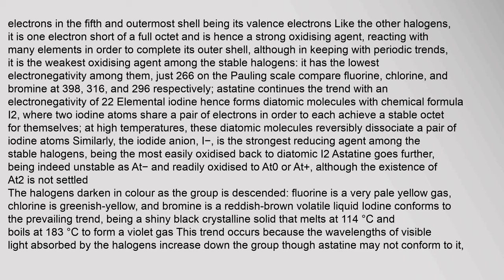Iodine has the lowest electronegativity among the stable halogens, at just 2.66 on the Pauling scale, compared to fluorine, chlorine, and bromine at 3.98, 3.16, and 2.96 respectively. Astatine continues the trend with an electronegativity of 2.2. Elemental iodine forms diatomic molecules with the chemical formula I₂, where two iodine atoms share a pair of electrons to each achieve a stable octet.